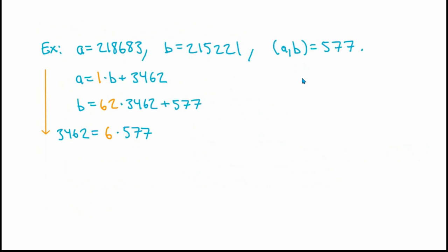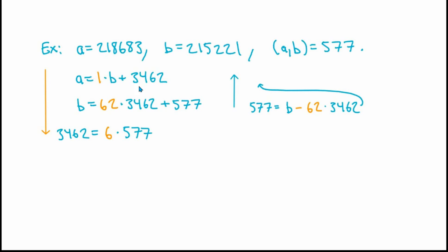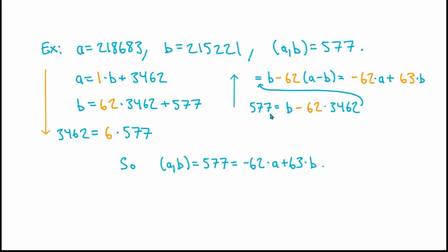So by running the Euclidean algorithm followed by the reverse Euclidean algorithm, we now have a fast way not only of computing the GCD, but of writing the GCD as an integer times a plus an integer times b. To make sure that we understand this, let's look at our example from before. When we ran the Euclidean algorithm with this choice of a and b, these are the steps that we obtained. But now let's suppose that we want to write the GCD 577 as an integer multiple of a plus an integer multiple of b. It's a lot faster to use the reverse Euclidean algorithm, because in this case it's only going to take two extra steps. We start from the next to last step in the Euclidean algorithm and use it to write the GCD as b - 62·3462. Next, we use the previous step to write 3462 as a - b, and substitute that in. Finally, we expand out this equation to conclude that the GCD of a and b is -62·a + 63·b. That's really all there is to it.